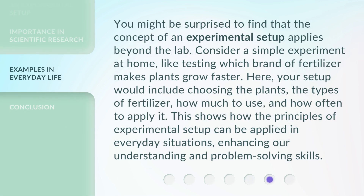You might be surprised to find that the concept of an experimental setup applies beyond the lab. Consider a simple experiment at home, like testing which brand of fertilizer makes plants grow faster. Here, your setup would include choosing the plants, the types of fertilizer, how much fertilizer to use, and how often to apply it. This shows how the principles of experimental setup can be applied in everyday situations, enhancing our understanding and problem-solving skills.